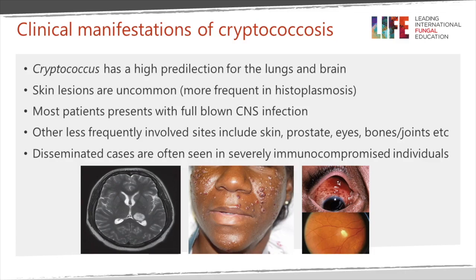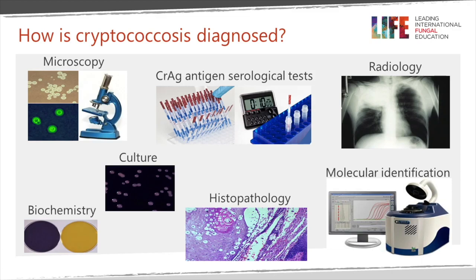Disseminated cases are often seen in severely immunocompromised individuals, particularly those with HIV, AIDS, and transplant patients, but it is also seen in people without any apparent immune deficiency.